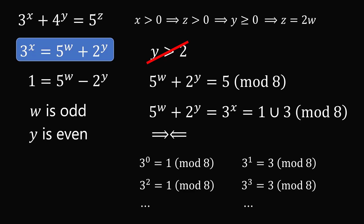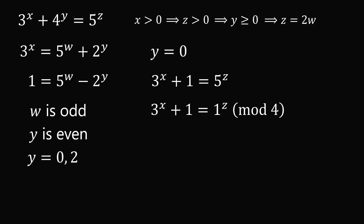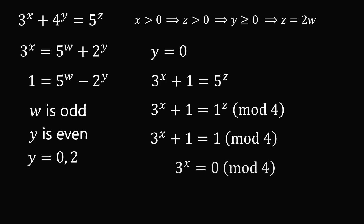Since y is even and greater than or equal to 0, there are two cases: y equals 0 or y equals 2. Suppose y is equal to 0. Substituting in, we get 3 to the power of x plus 1 is equal to 5 to the power of z. Working modulo 4, this implies that 3 to the power of x is equal to 0 mod 4, which is impossible. Thus we have a contradiction, so y cannot be equal to 0.